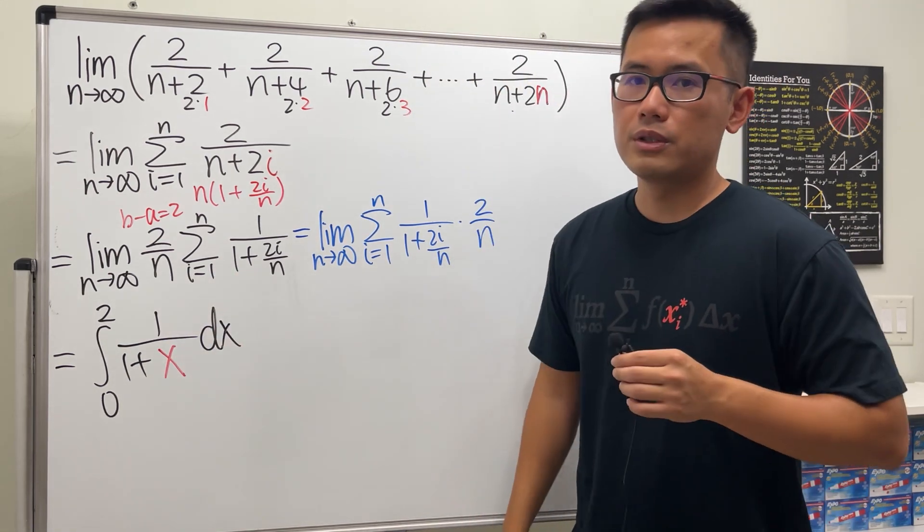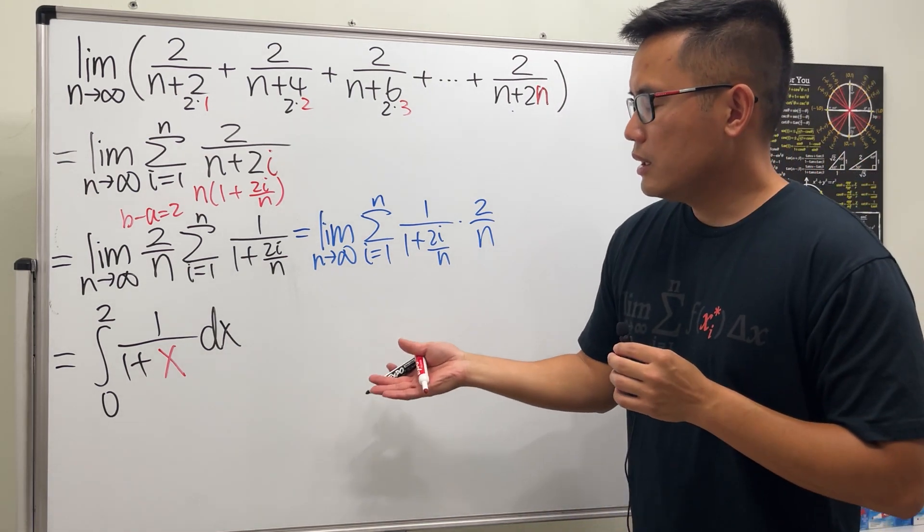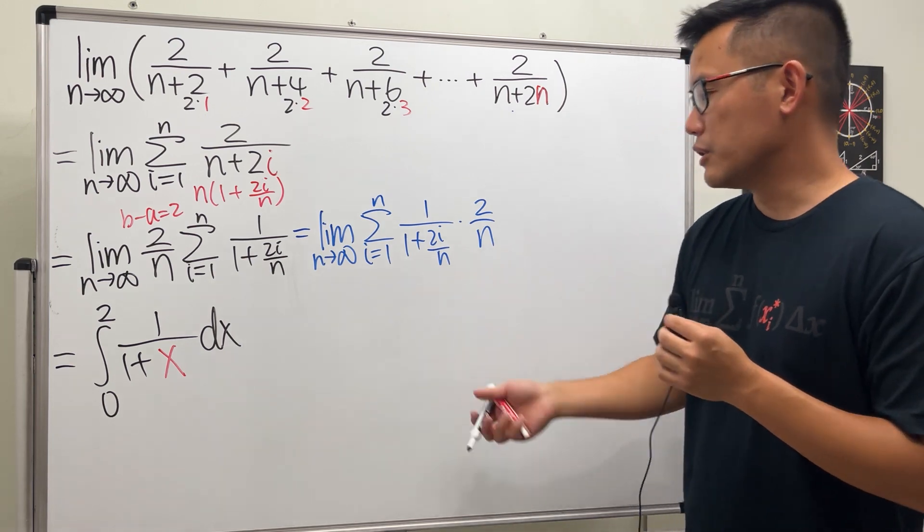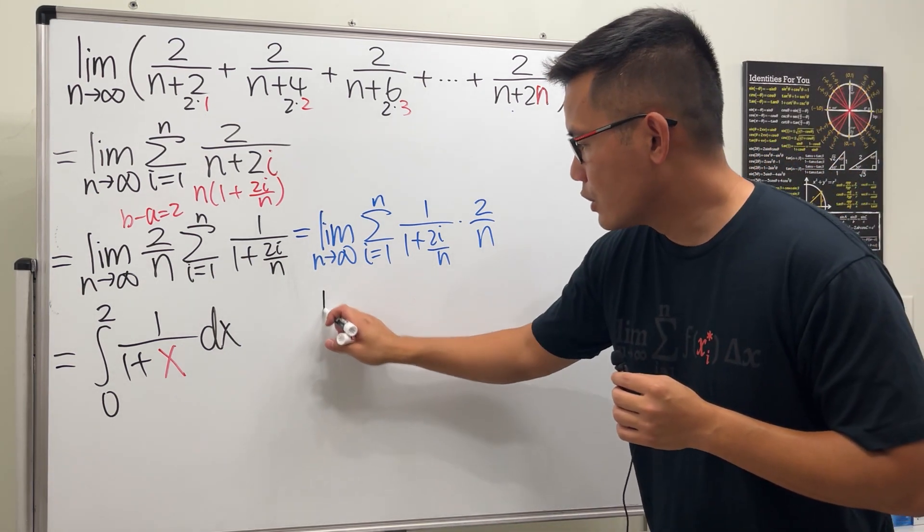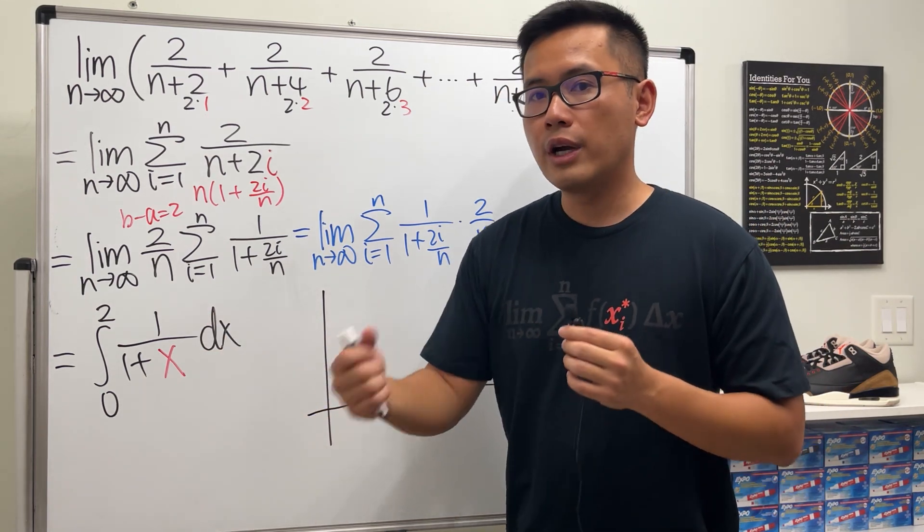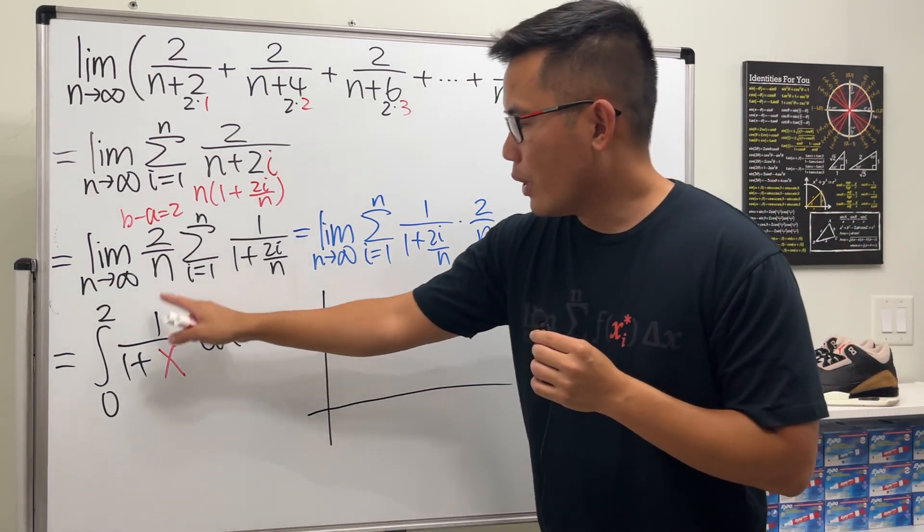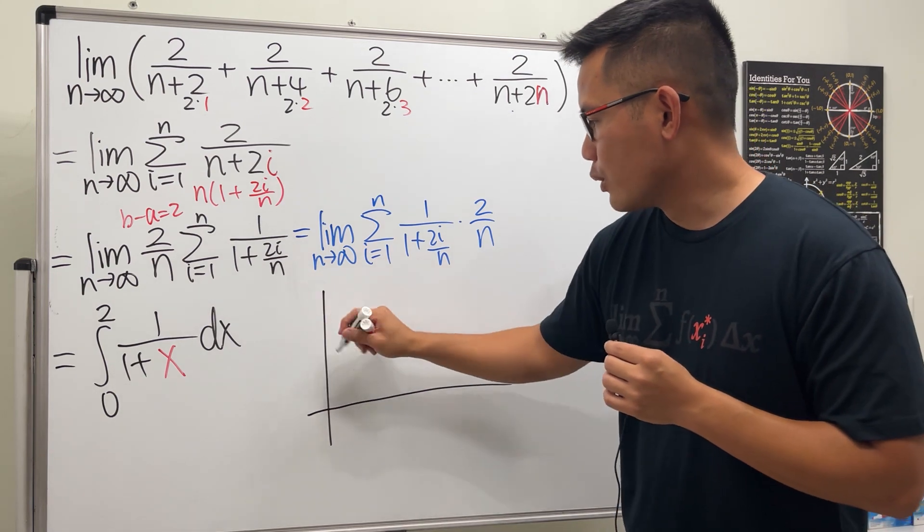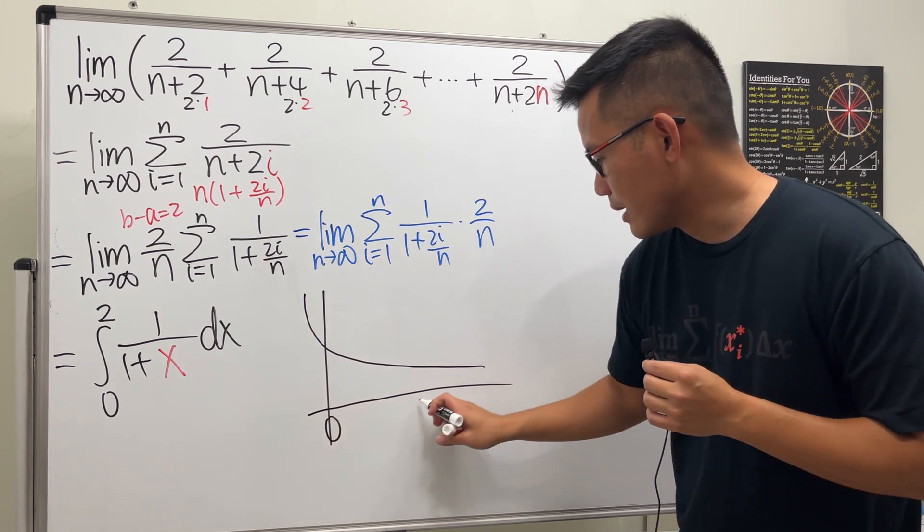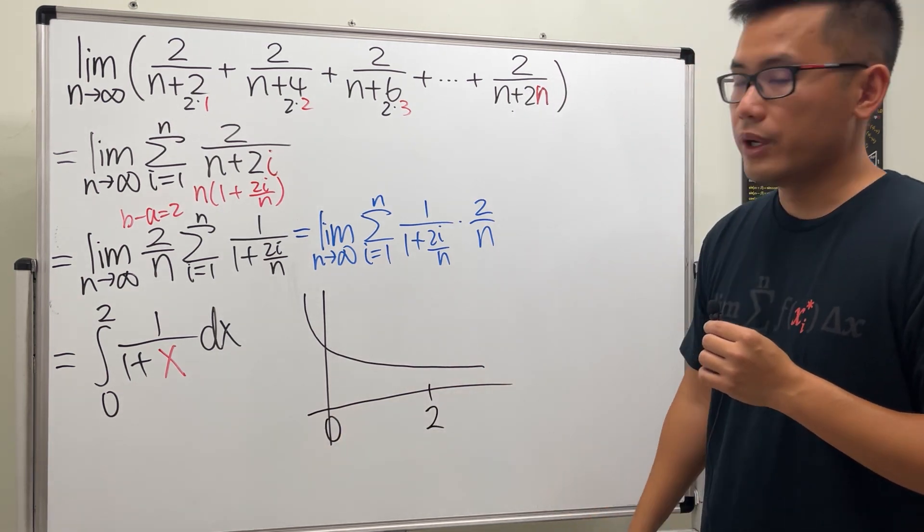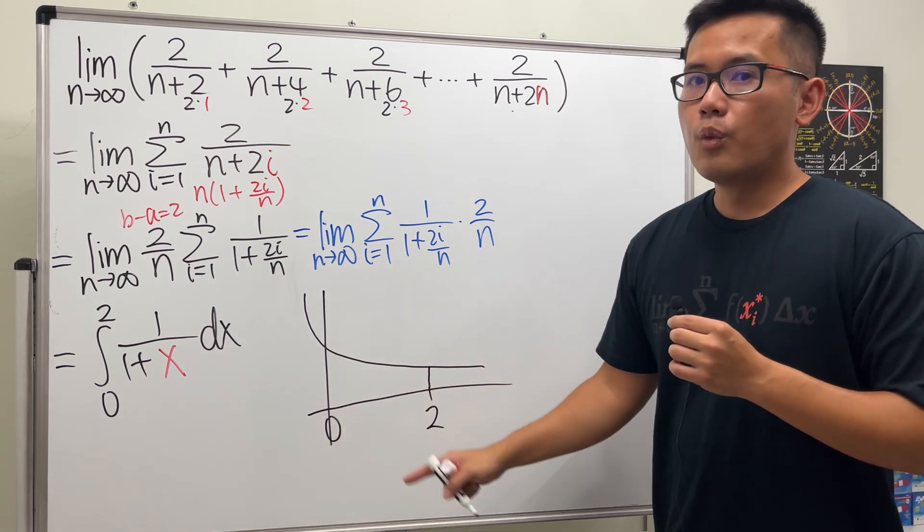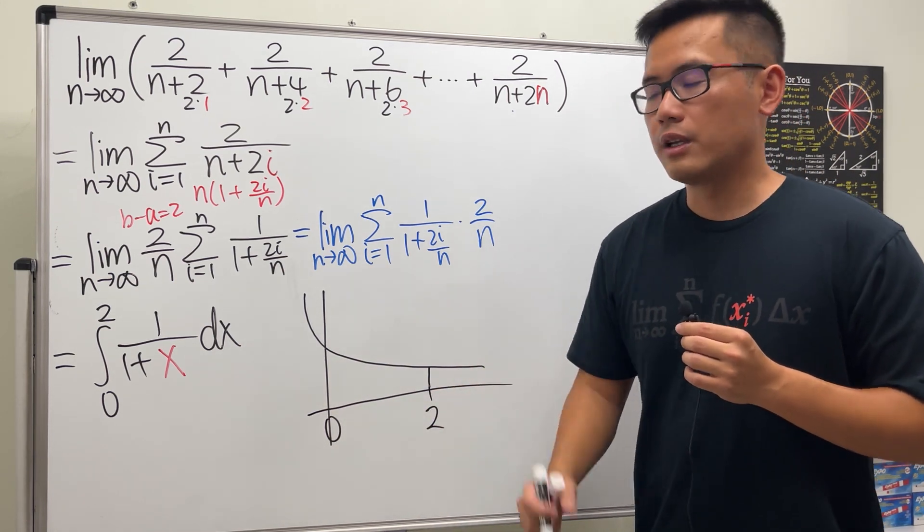And that's pretty much how to change it. Usually it might be hard to see. If so, then I would suggest you to do the following: just go ahead and start with what your region is and start with your integral, and then try to work backwards. 1 over 1 plus x, the graph will look like this. And then we are going from 0 to 2. That's my claim. And I'm just going to show you that this will indeed work. Here is the region. We are going to use n equal widths rectangles, meaning that each width is going to be 2 over n.